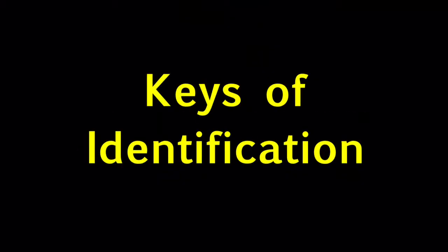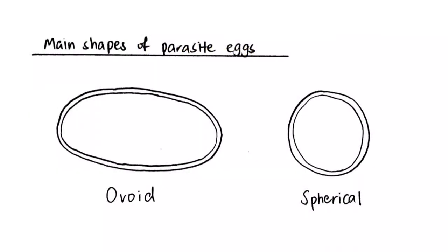These different parasites can be differentiated based on the structures of their eggs and the structures of their larva. When looking at the egg structures, we can first look at the shape of the egg. Here are the main shapes of parasite eggs.